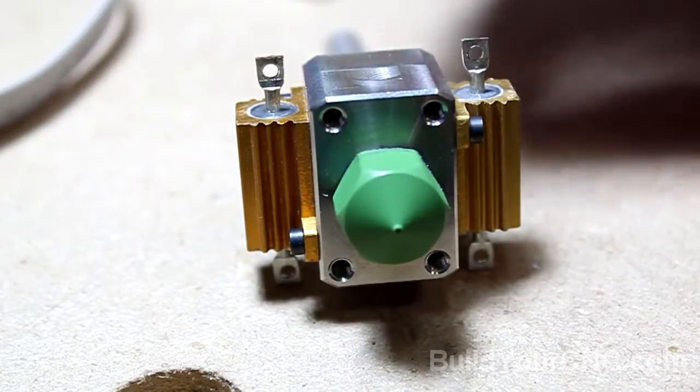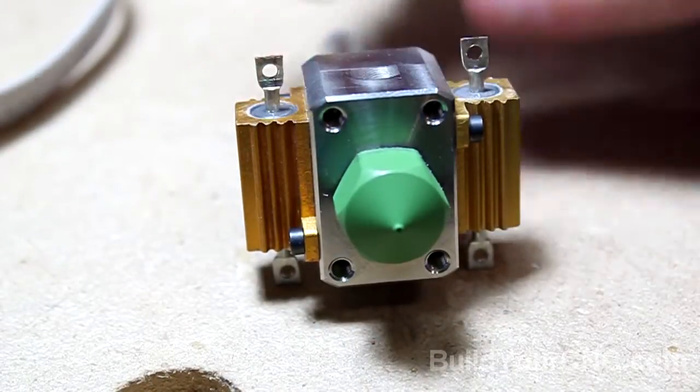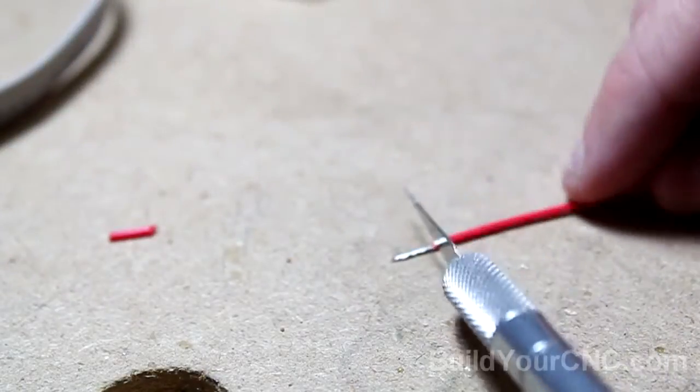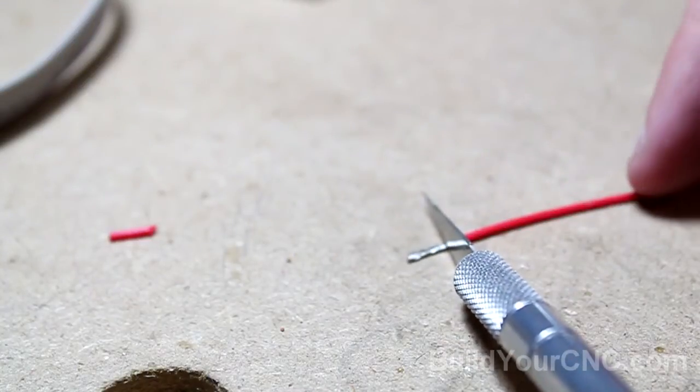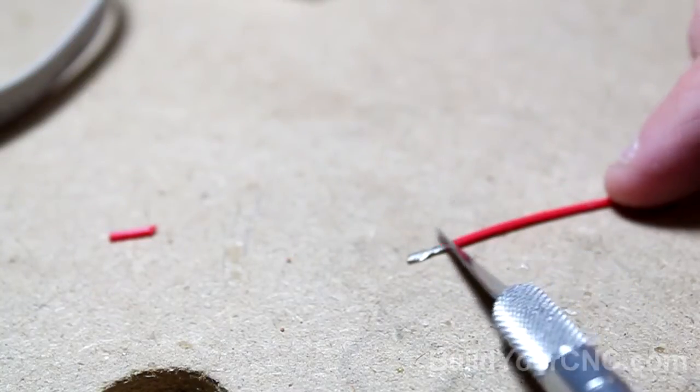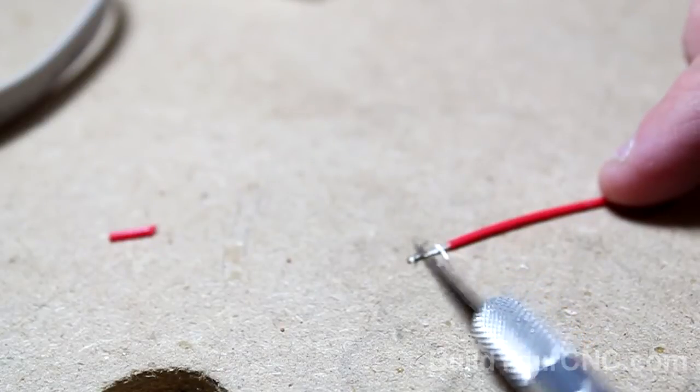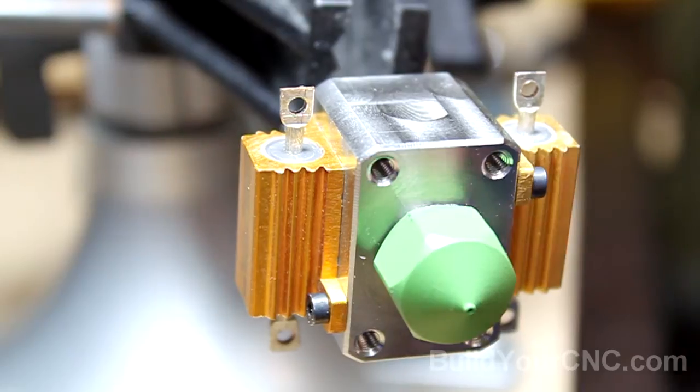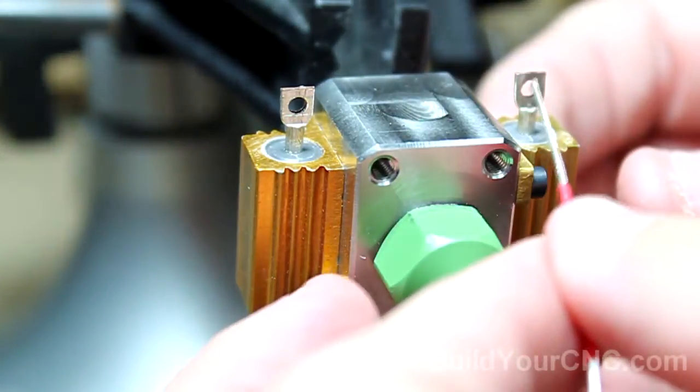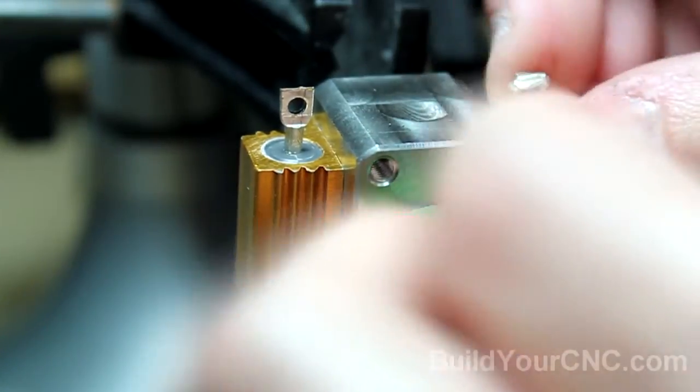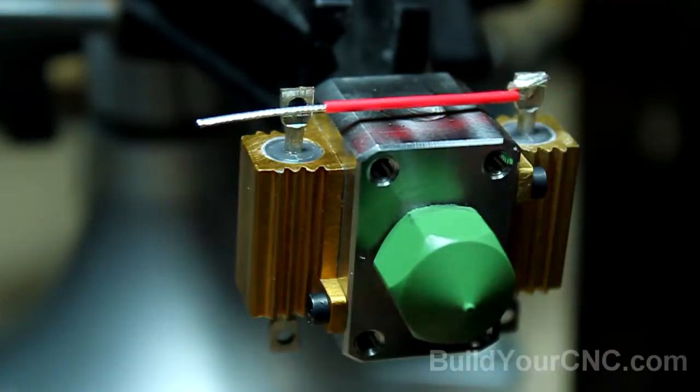We're going to solder the two resistors in parallel. We're going to make these two connections and then wire them out from there. Use an exacto knife or a really sharp knife to cut the insulation off of this special wire. This wire is coated with PTFE which will handle higher temperatures, so this is the best wire to use. I'm going to use as much of the wire as I can for the mechanical hold.